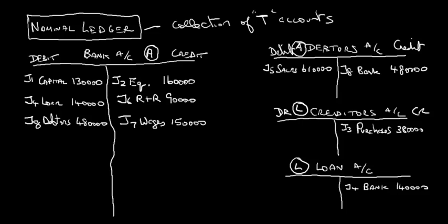Transaction 9 (J9): Payments to creditors for stock £240,000. Two accounts: bank (asset — decreases, credit) and creditors (liability — decreases, debit). We debit creditors 'Bank 240,000' and credit bank 'Creditors 240,000'.